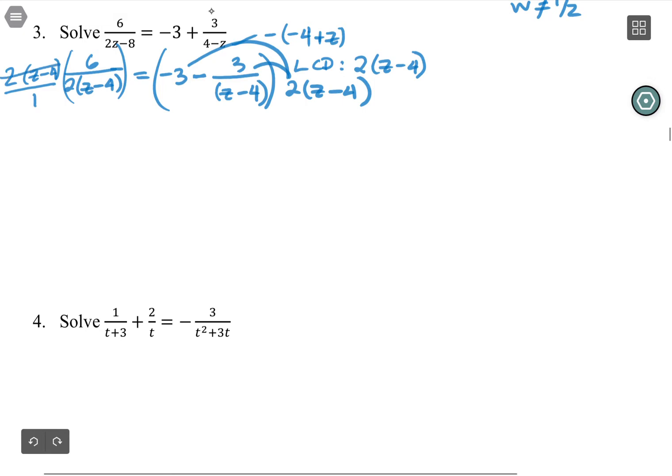So over here on the left, the entire two and z minus four cancel, and all I'm left with is a six. I'm going to write the right out before I completely get rid of things. So I'm going to multiply negative three by two times z minus four, and I get negative six, z minus four. I will distribute that six in in a minute. But I want to just get the two multiplied first. And when I distribute, that'll make sure the z and the four are also multiplied by the two. Then I have minus three over z minus four times two times z minus four.